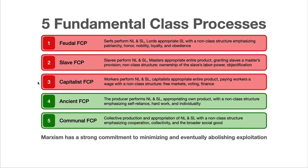Marxism has a very strong commitment to minimizing and eventually abolishing exploitation altogether from society. There are two class processes that do not involve that: the producers themselves, either individually — in the case of the ancient fundamental class process, also sometimes called petty bourgeois or independent commodity production — and the communal fundamental class process. Both of these involve the workers themselves appropriating their own surplus, either individually or collectively.